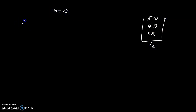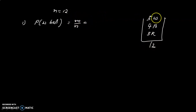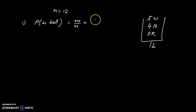The first question: what is the probability that it is a white ball? Probability of white ball equals m by n. N is already 12. The favorable case m is the number of white balls, which is 5. So the probability of getting a white ball is 5 by 12.